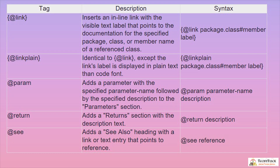@link inserts an inline link with a visible text label that points to the documentation for the specified package, class or member name of a referenced class. @linkplain is identical to @link except the link's label is displayed in plain text rather than code font. @param adds a parameter with a specified parameter name followed by the specified description to the parameters section. @return adds a return section with a description text.